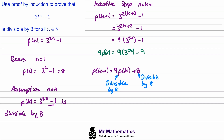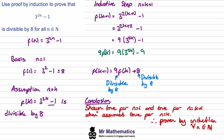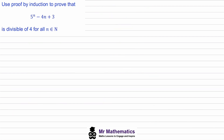That's our inductive step complete, so now we write our conclusion. We've shown it's true for n equals one, and true for n equals k plus one when assumed true for n equals k. Therefore proven by induction for all values of n that are elements of the set of natural numbers. We've been asked to use proof by induction to prove that five to the n minus four n plus three is divisible by four for all values of n in the natural numbers.